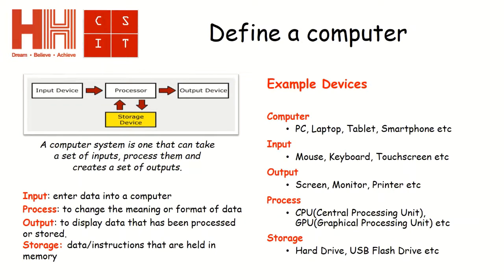The first lesson objective we are going to look at is defining a computer. The official definition is: a computer system is one that can take a set of inputs, process them and create a set of outputs, with storage that is involved along the process.